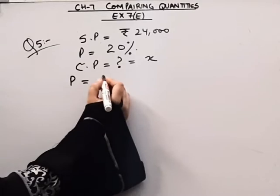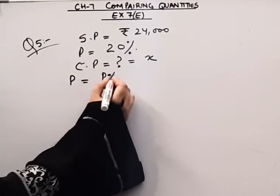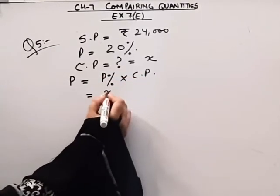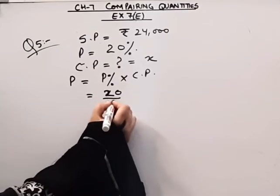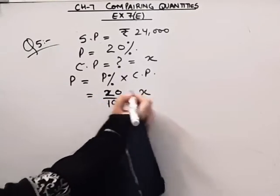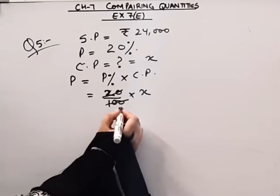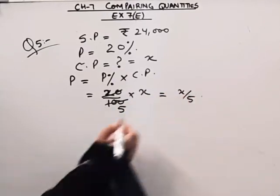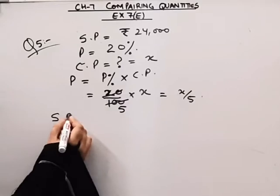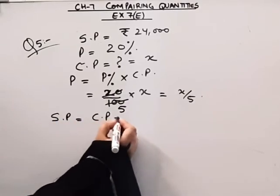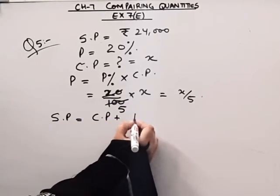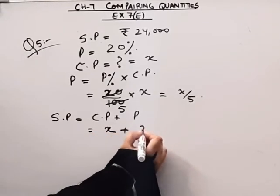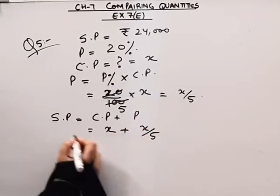The profit will be profit percentage into cost price. The profit percentage is 20 upon 100 into the cost price x, which gives x by 5. We know that selling price is equal to cost price plus gain, so the selling price is x plus x by 5.